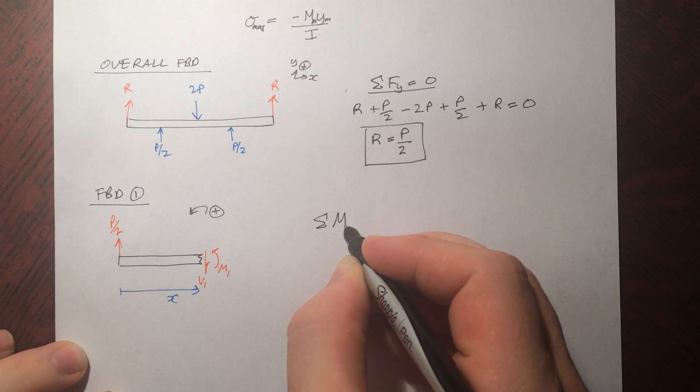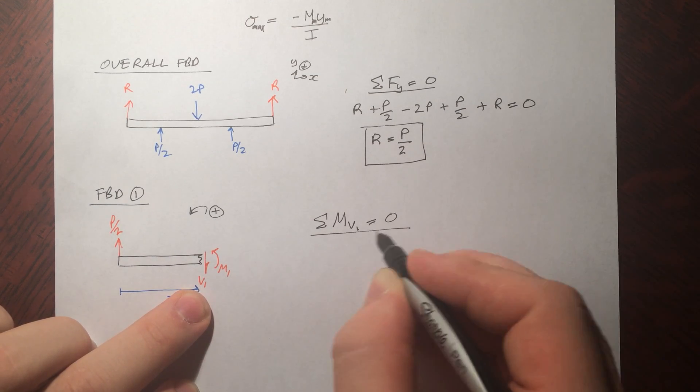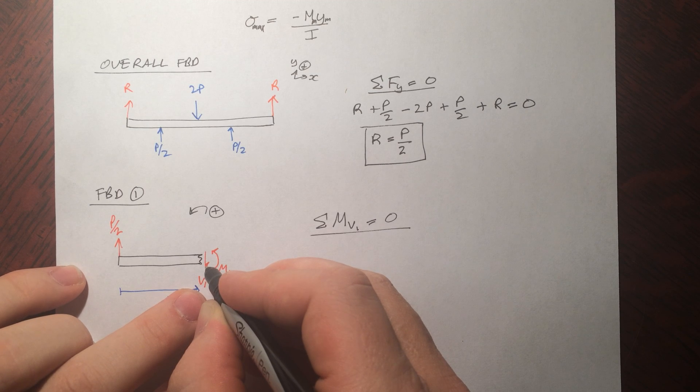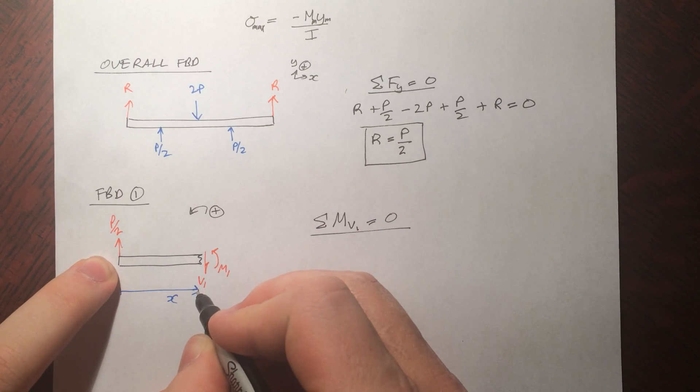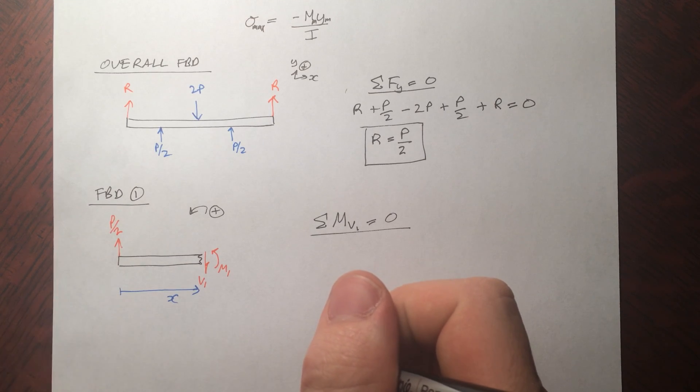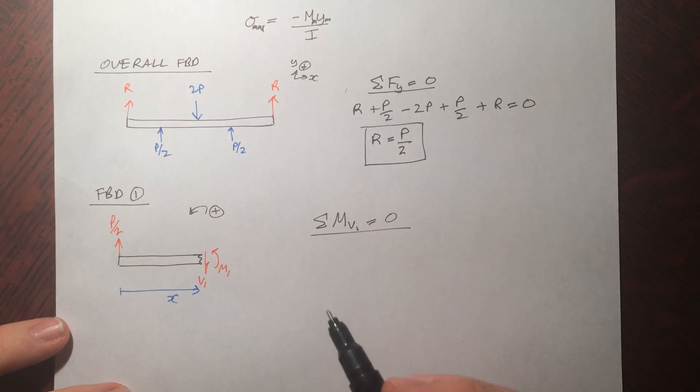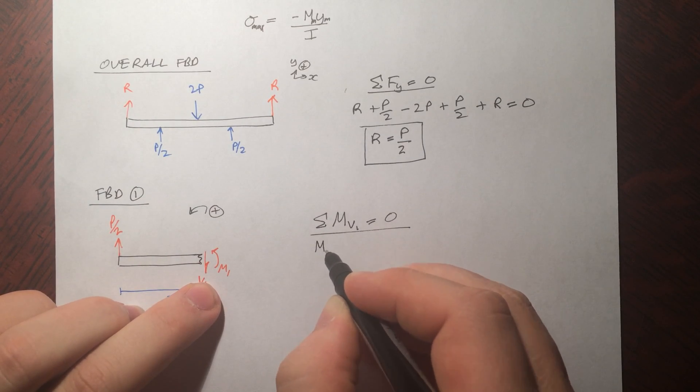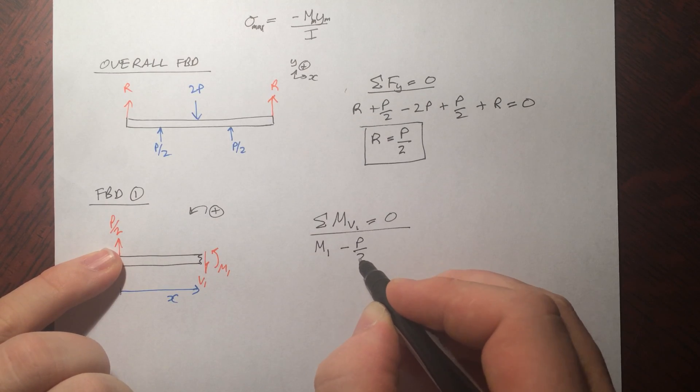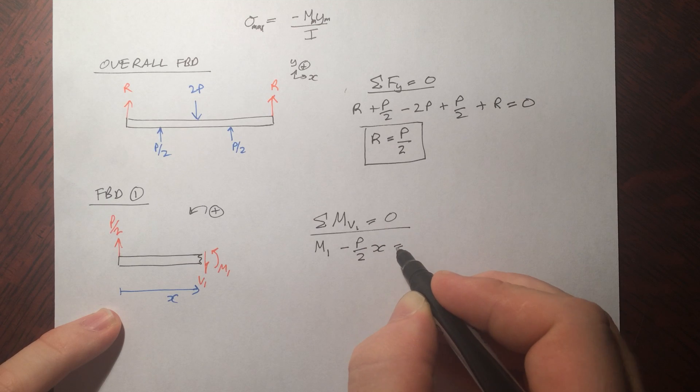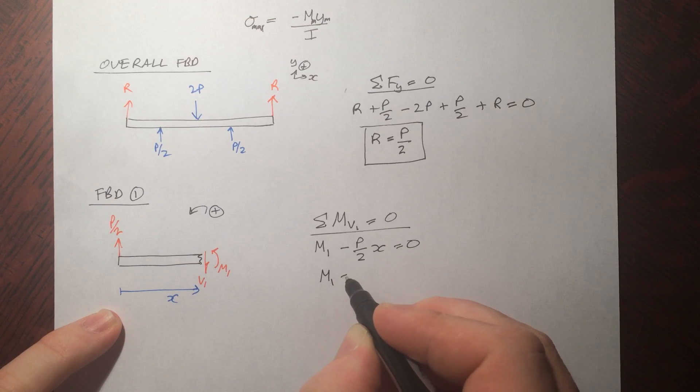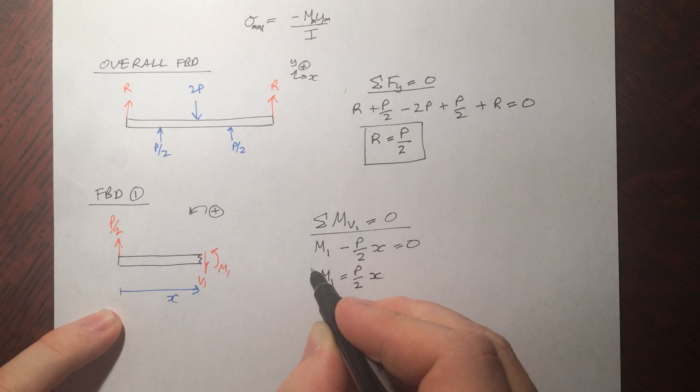Now we can simply sum up the moments about V1. It's always best to do it about the cut end because if you do it about this end, you'll need to use V1. So you need to find V1 first. There's a slight chance you can make an error in V1. If you use V1, you'll have the error in M as well. So taking the moment out of here, you eliminate that little bit of room for error.